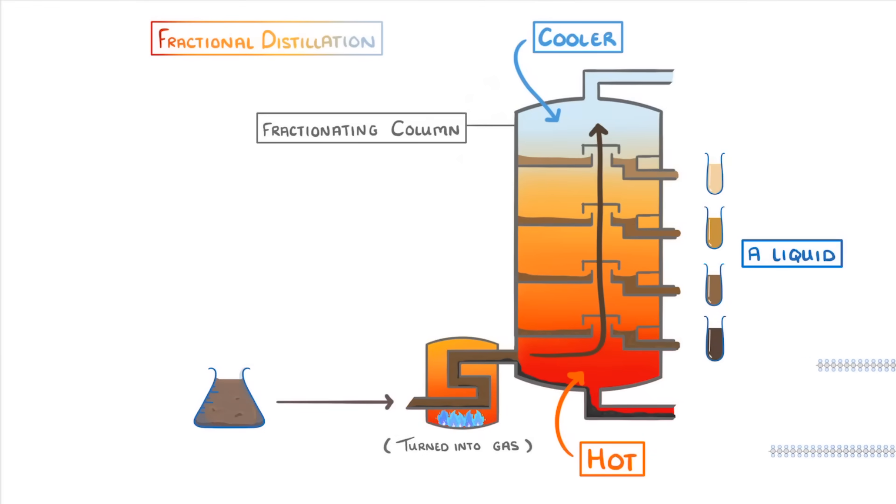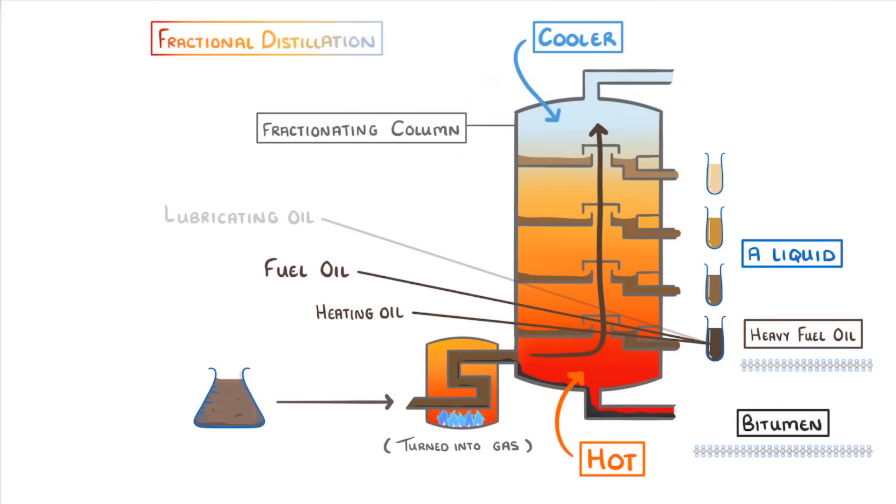The hydrocarbons with the longest chains, so the most carbons, have the highest boiling points, and so they'll quickly condense back into a liquid and drain out of the column early on, because it's not hot enough to keep them in their gaseous states. These are things like bitumen, which we use to surface our roads, and heavy fuel oil, which can be separated further and used for things like heating oil, fuel oil, or lubricating oil.